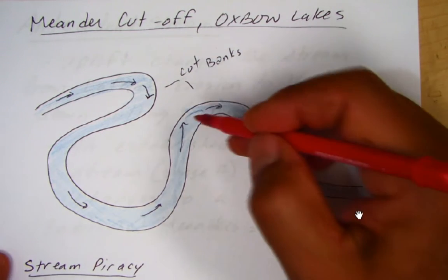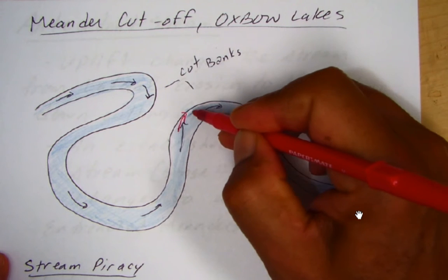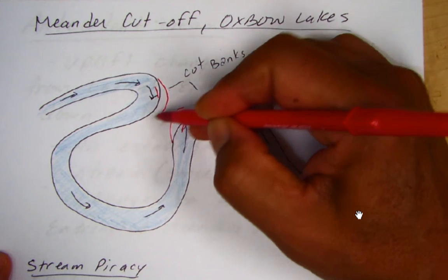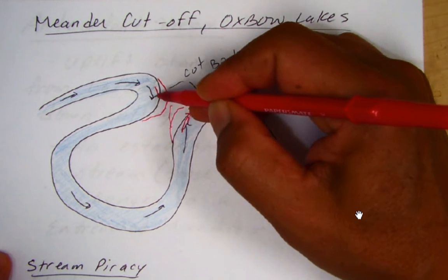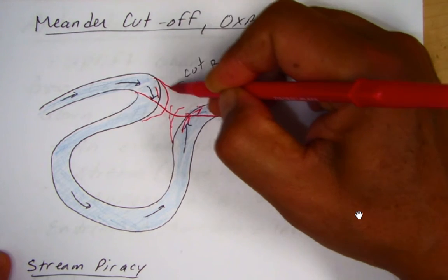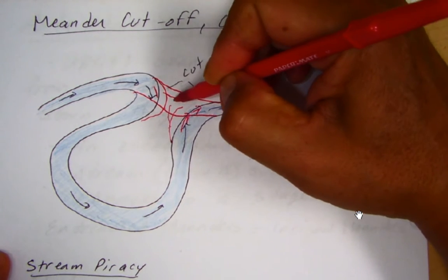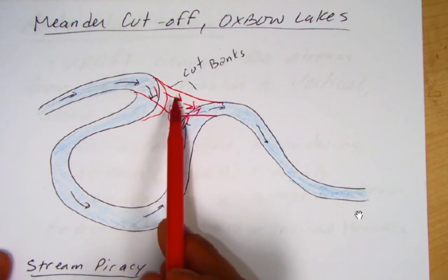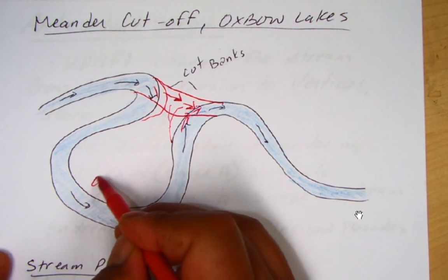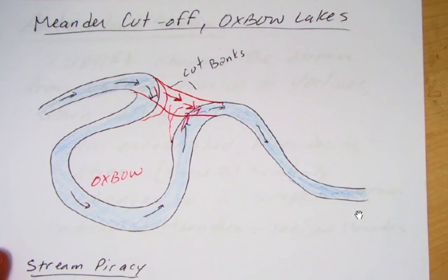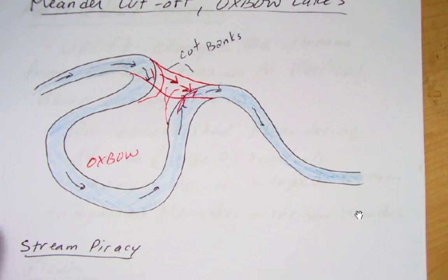By the same idea, we have erosion at the cut banks. Eventually these will start eroding toward each other, and eventually the channel will take the easier route — the water flows in a straight path. Once that happens, the old bend becomes the oxbow — the abandoned portion of the stream. That's how meander cutoffs work and how we get oxbow lakes.